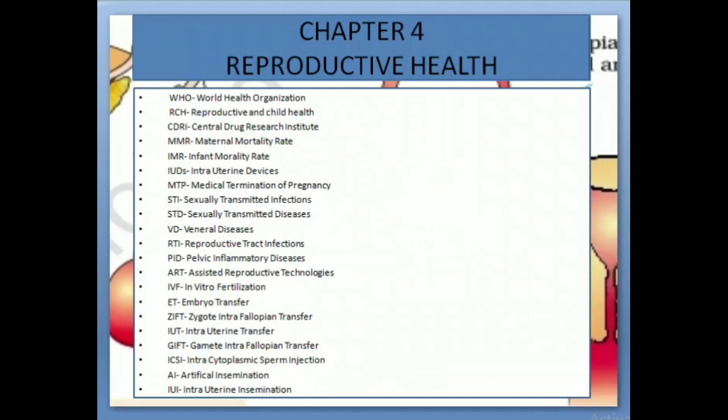Chapter 4: Reproductive Health. WHO: World Health Organization. RCH: Reproductive and Child Health. CDRI: Central Drug Research Institute. MMR: Maternal Mortality Rate. IMR: Infant Mortality Rate. IUDS: Intrauterine Devices. MTP: Medical Termination of Pregnancy. STIs: Sexually Transmitted Infections. STDs: Sexually Transmitted Diseases.